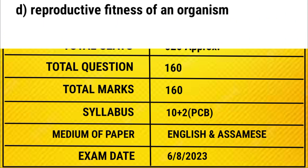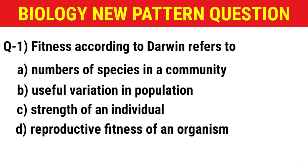The first question: Fitness according to Darwin refers to — (A) number of species in a community, (B) useful variation in population, (C) strength of an individual, (D) reproductive fitness of an organism. The correct answer is option D: reproductive fitness of an organism.